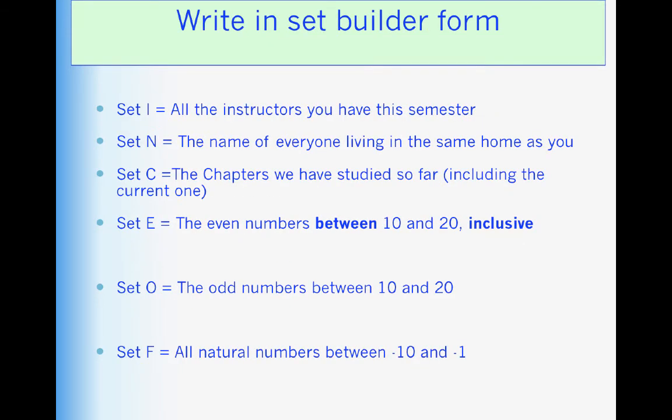So pause. Try to write these in set builder form. All right. Now that you've come back, let's see what you did. Here's set E, all x such that 10 less than or equal to x less than or equal to 20. The less than or equal to's are what covers us when we say inclusive because we're including the 10 and the 20. The odd numbers between 10 and 20. So we do not include the 10 and the 20. And all natural numbers between negative 10 and negative 1. Well, that's an empty set. So we just simply write it as an empty set.